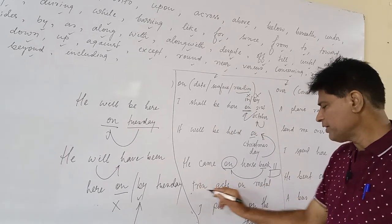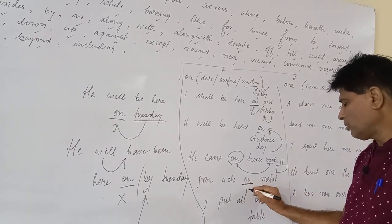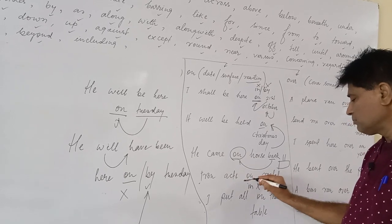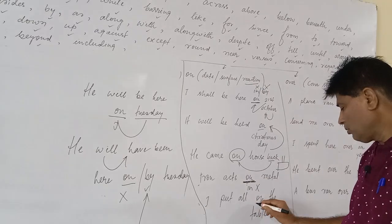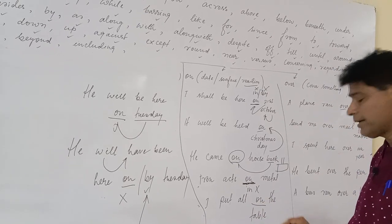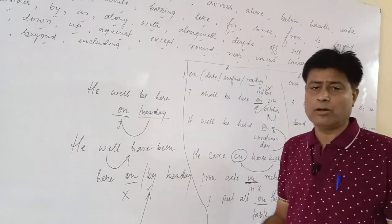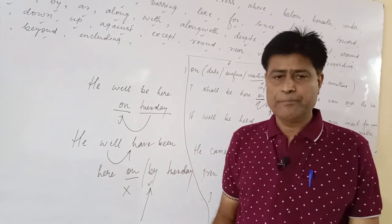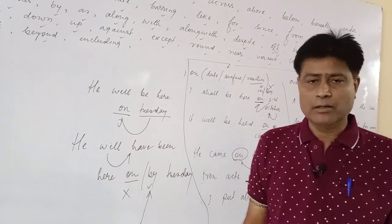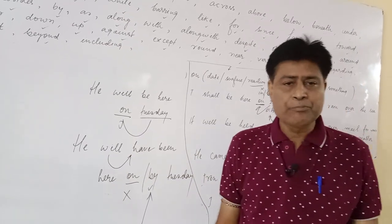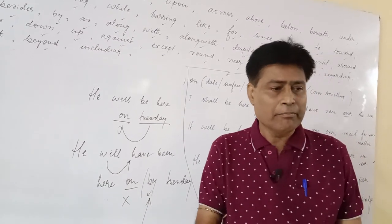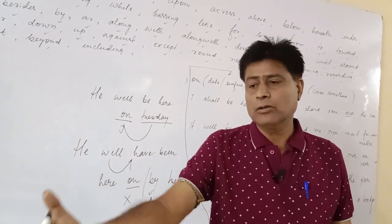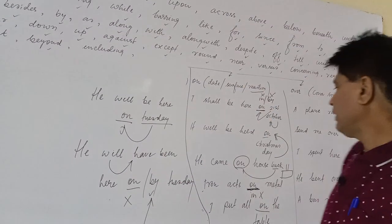Iron reacts on metal, not in metal. In the case of reaction, you have to use on preposition. I put all on the table. In the case of surface, you have to use on. I stood on the floor, I put all things on the table, I put the papers on the table, like that.